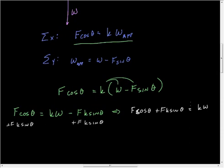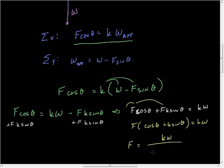From this point, since I'm looking for the force, I want to factor out the force. And so it's force times cosine theta plus K sine theta is equal to K W, which means that my force is equal to K W divided by the cosine theta plus K sine theta.